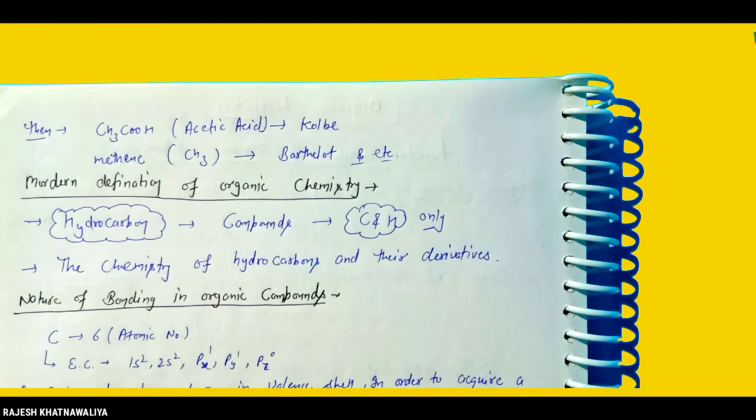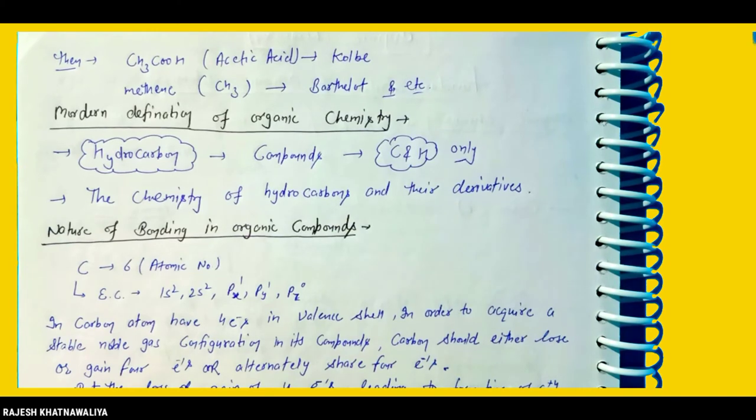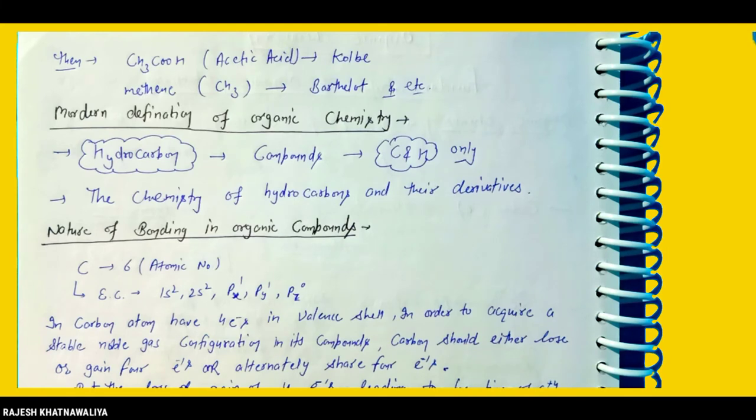The modern definition of organic chemistry is: the chemistry of hydrocarbons and their derivatives. This modern definition provides a clearer understanding of what organic chemistry encompasses.